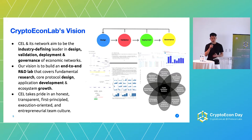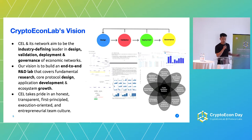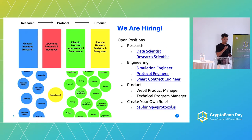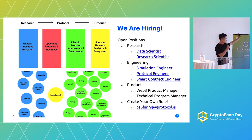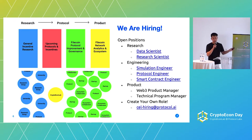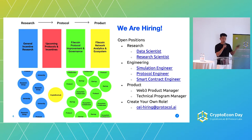People talk about Crypto Econ a lot — this diagram really illustrates the interdisciplinary nature of the space. We also take pride in our team culture, so if any of this speaks to you, reach out to us. We can talk more during the break or after presentations. We have upstream research, general incentives, all the way to upcoming protocol, new incentives, protocol governance, analytics, and ecosystem. We believe the success of the ecosystem is vital to the success of the economy. Given this end-to-end R&D scope, we are hiring across the board — research, product, engineering, and anything else. There's enough idea space and capital for everyone.